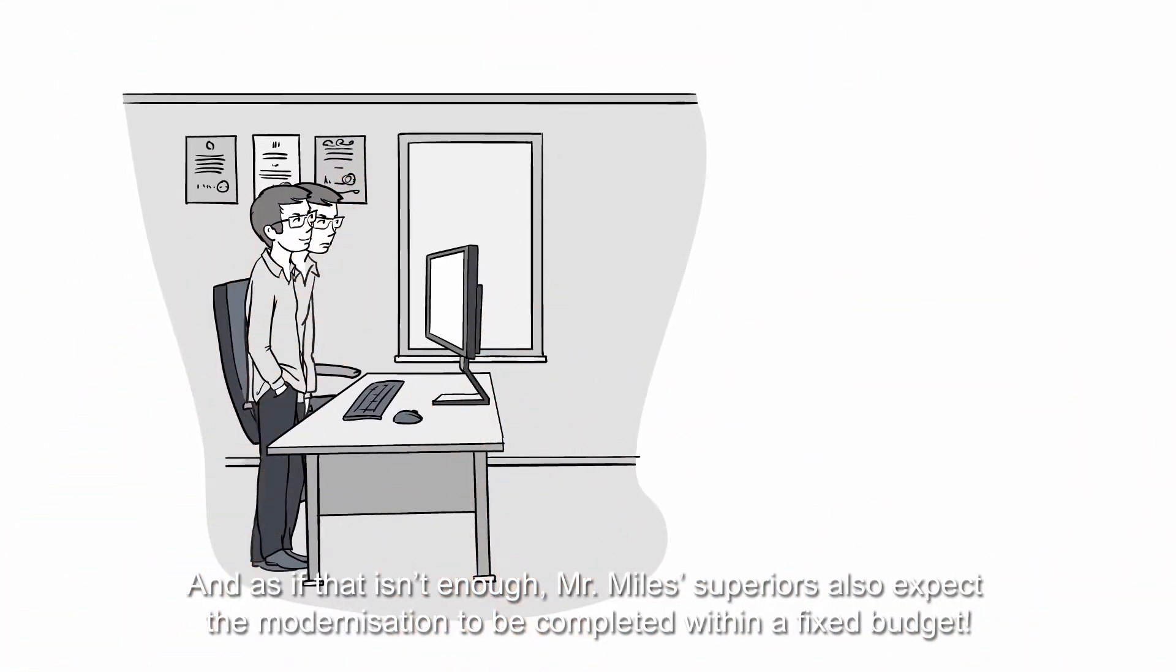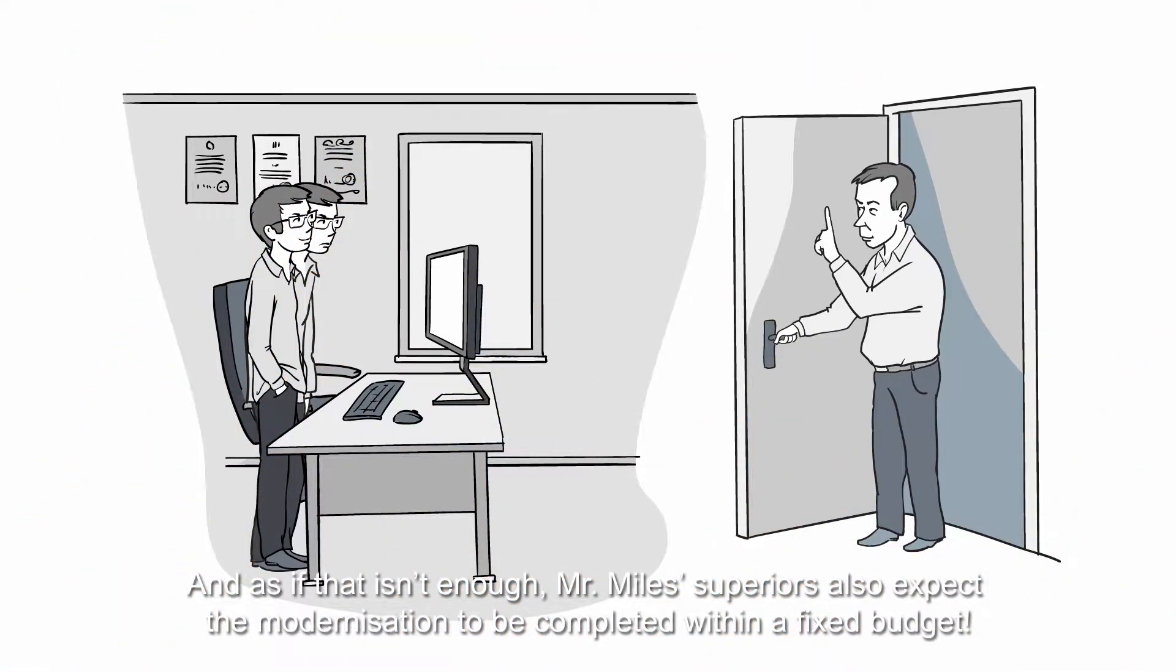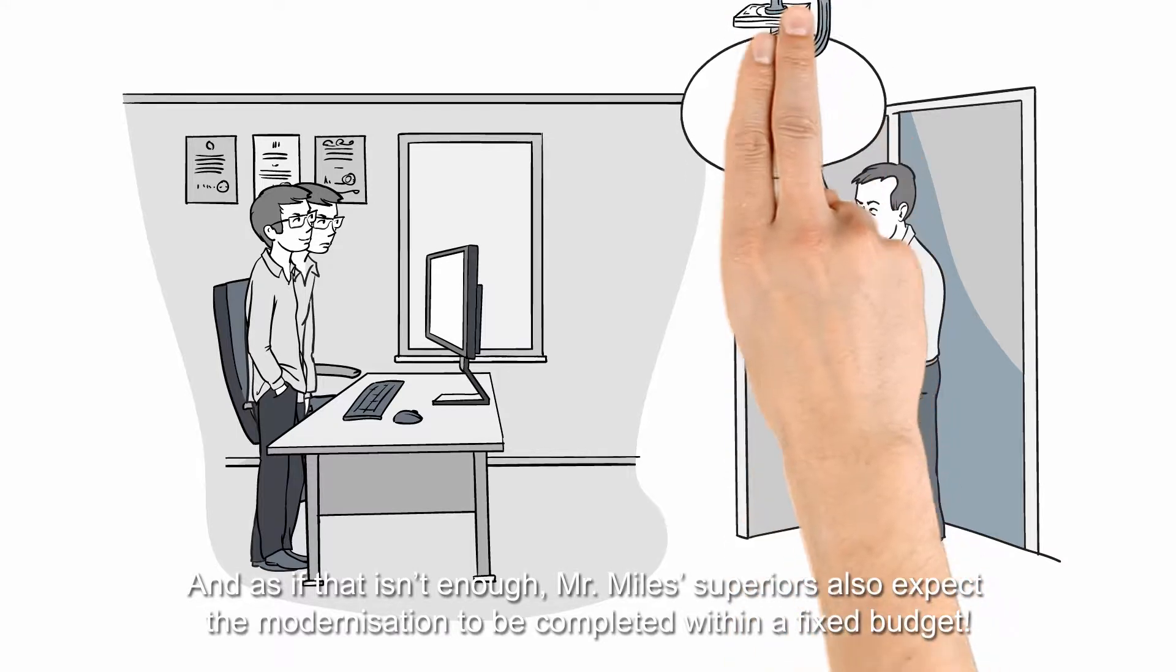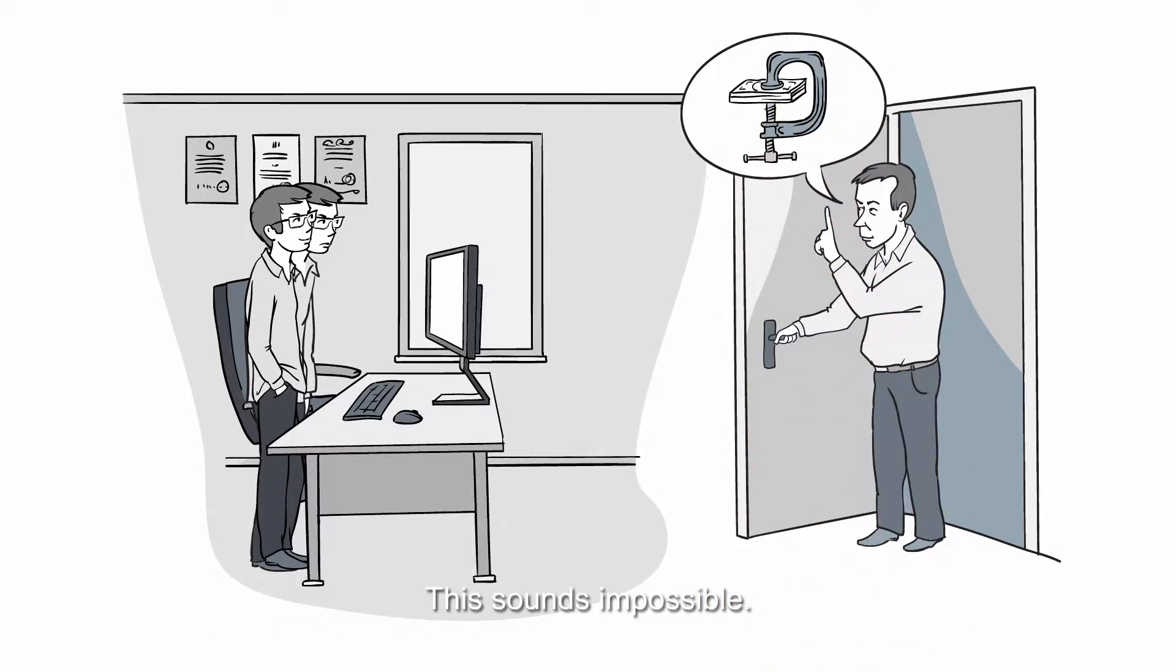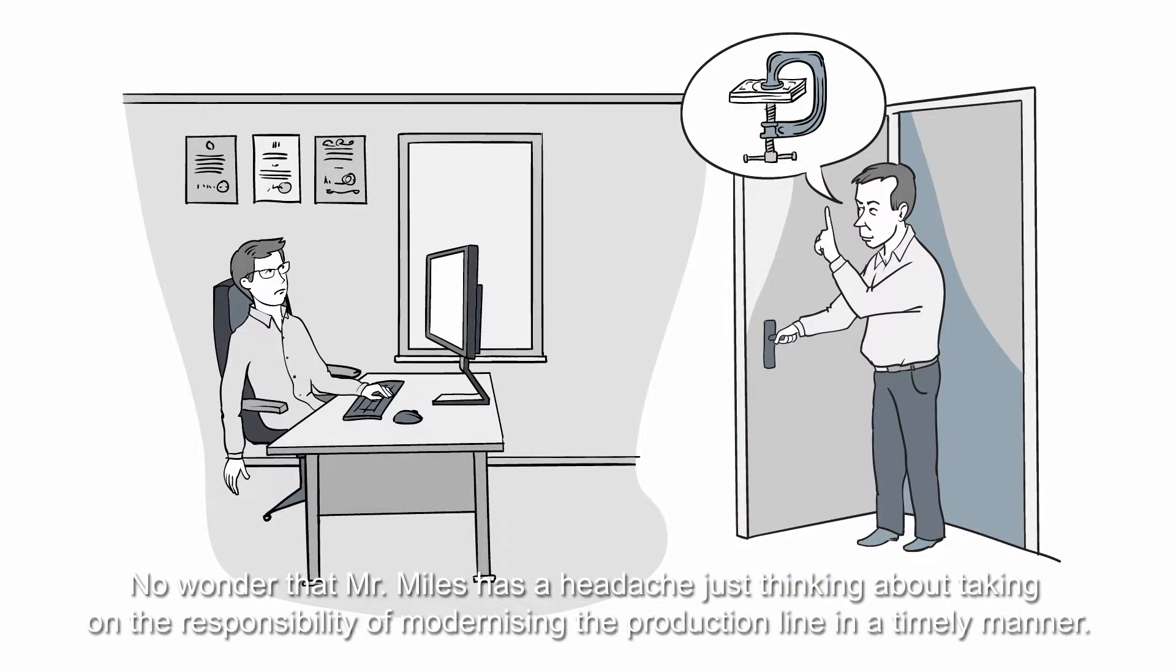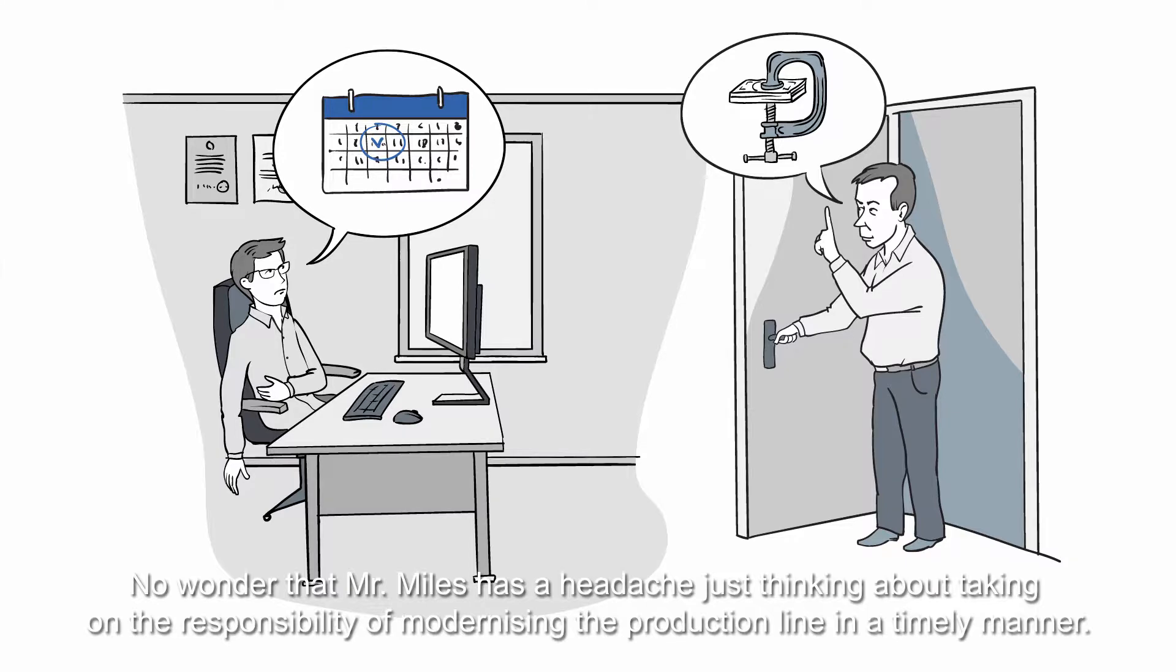And as if that isn't enough, Mr. Miles' superiors also expect the modernization to be completed within a fixed budget. This sounds impossible. No wonder Mr. Miles has a headache just thinking about taking on the responsibility of modernizing the production line in a timely manner.